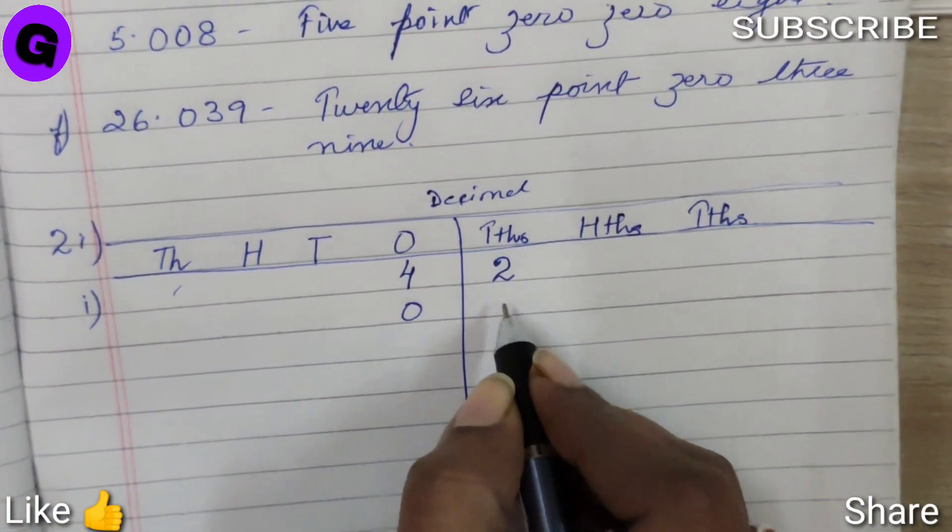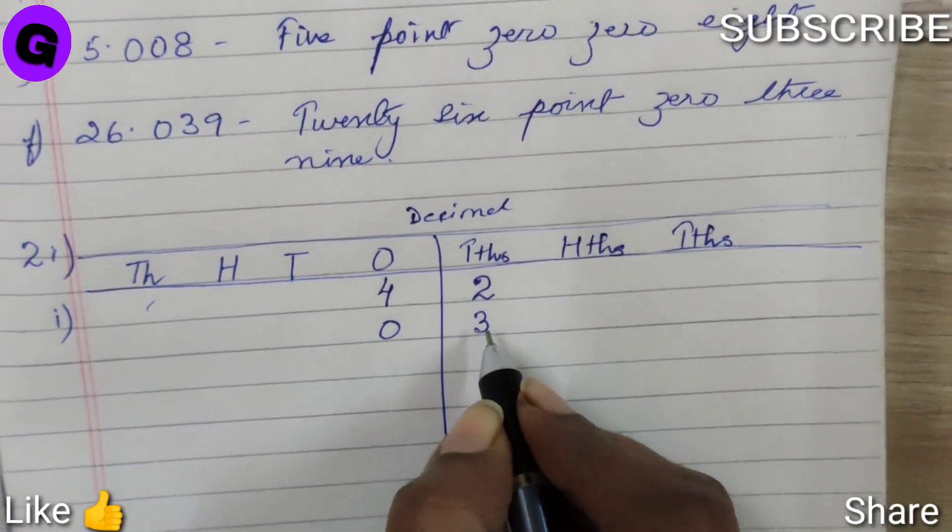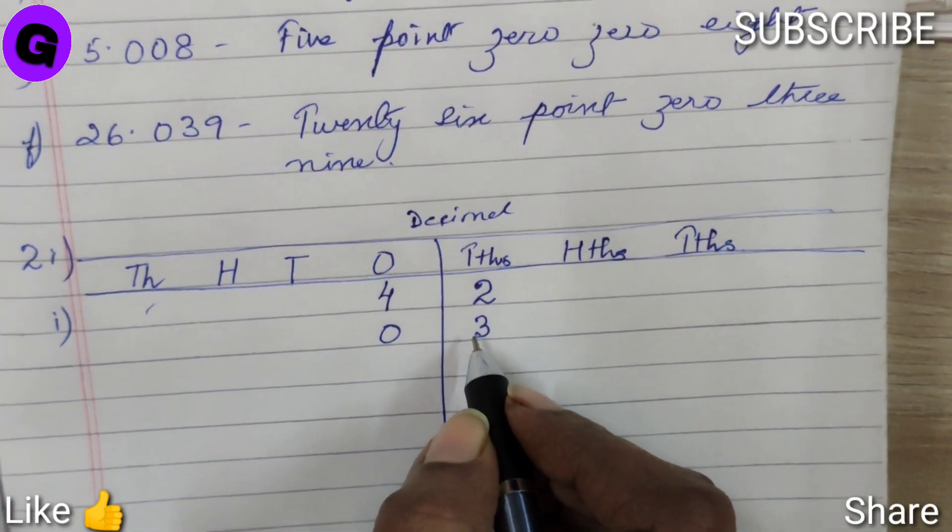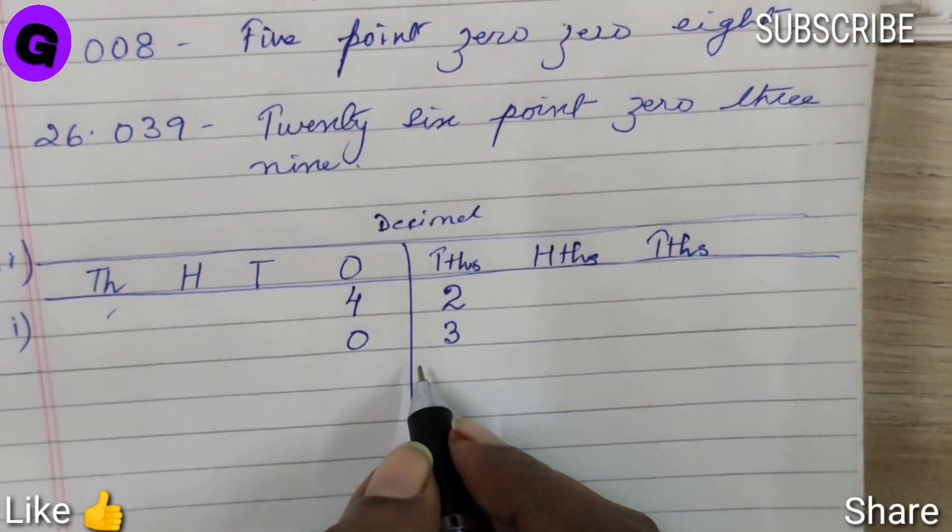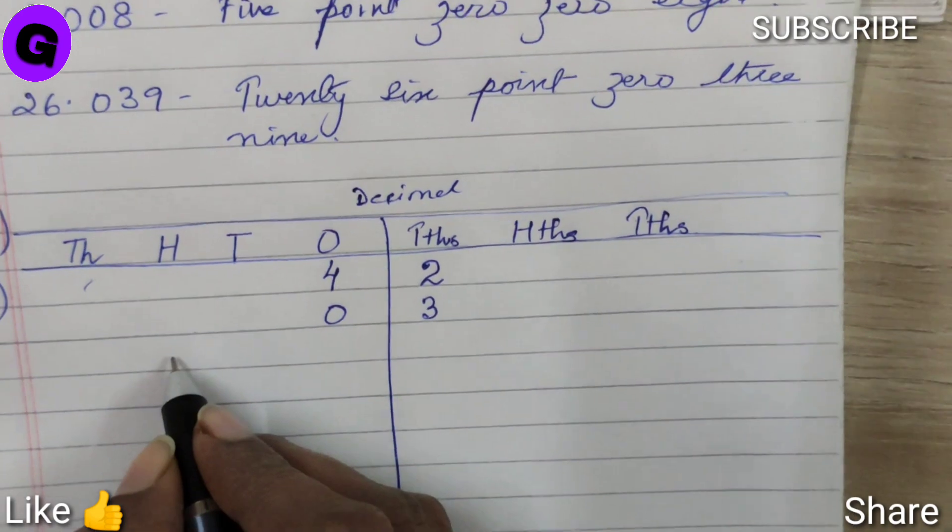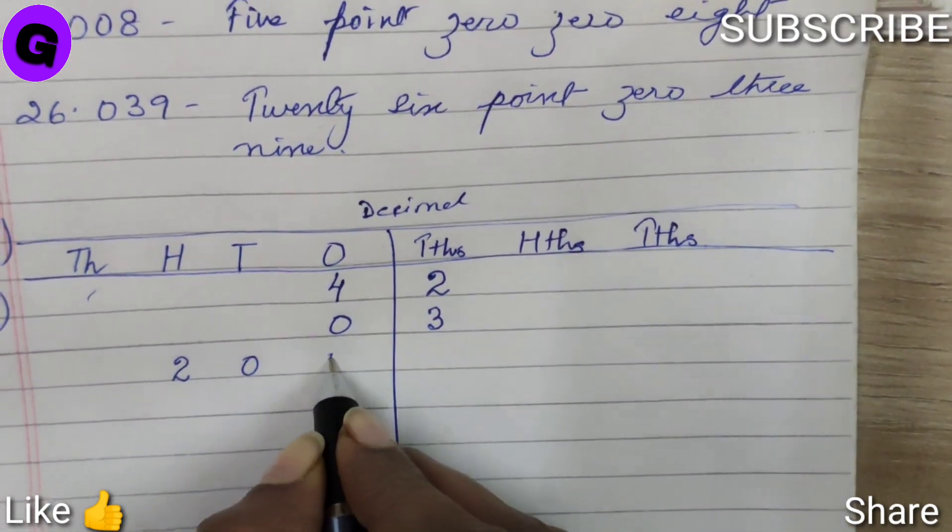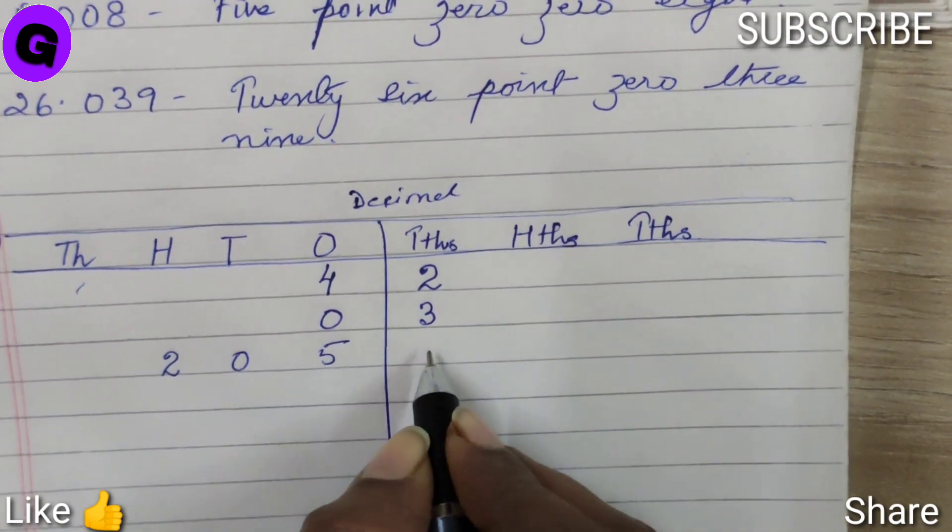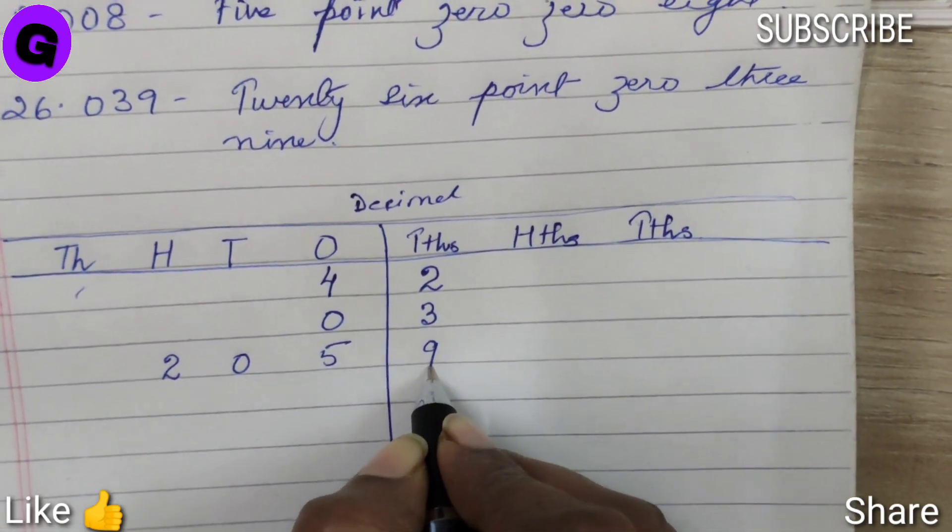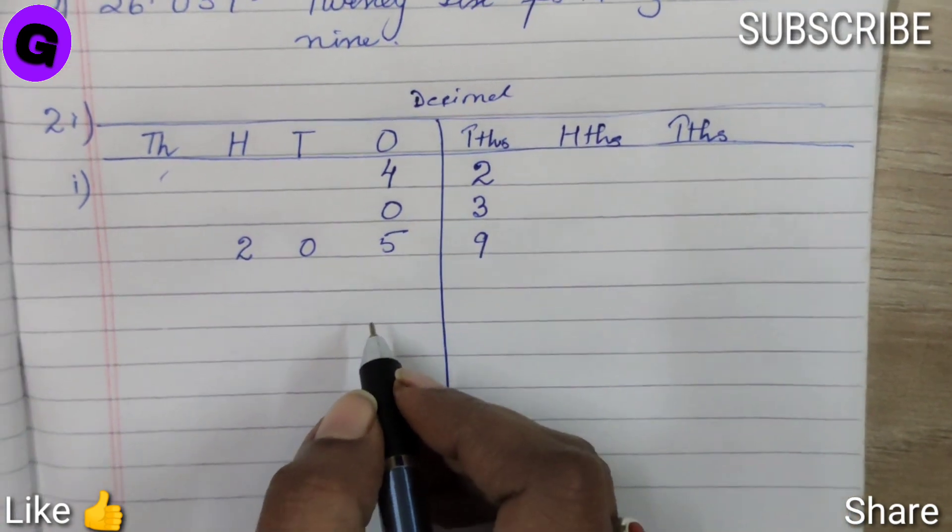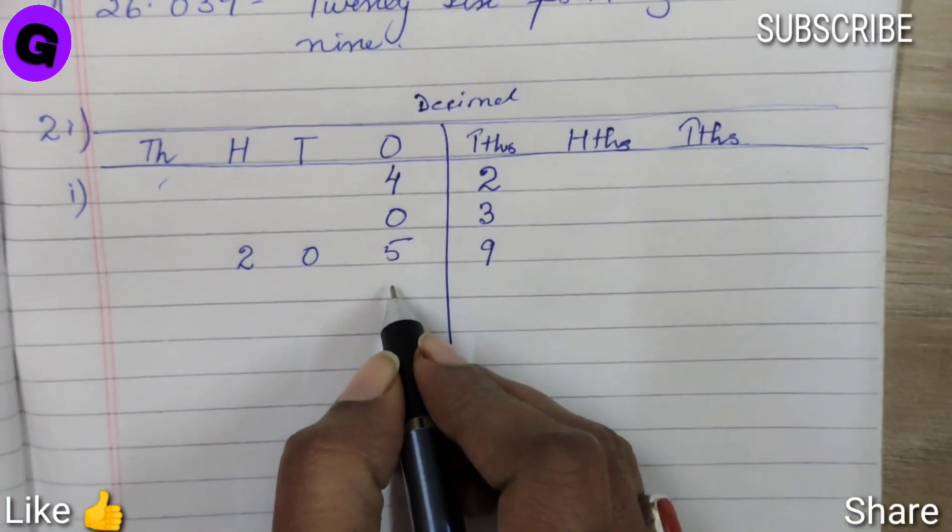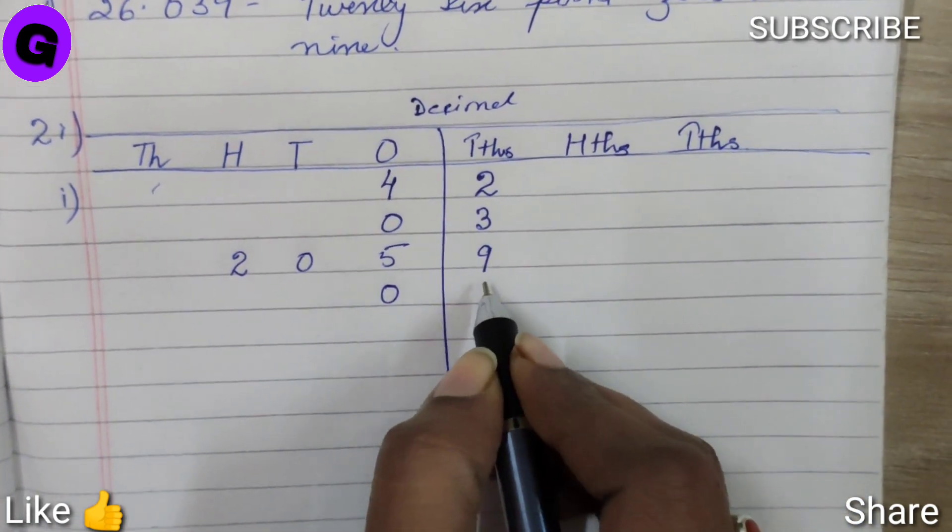Number 3, 205.9, so 205 means 2, 0, 5, and 0.9, 9 will be at tenths place. Number 4, 0.29, 0 comes under ones and 2, 9. 2 will be tenths and 9 will be hundredths.